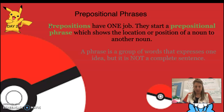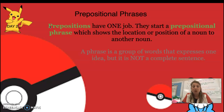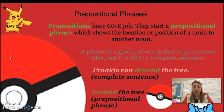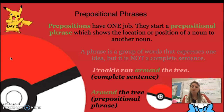A phrase is a group of words that expresses one idea, but it is not a complete sentence. For example: Frankie ran around the tree. 'Around the tree' is a prepositional phrase — it is not its own sentence. Frankie is the noun, and what did he do? He went around the tree.